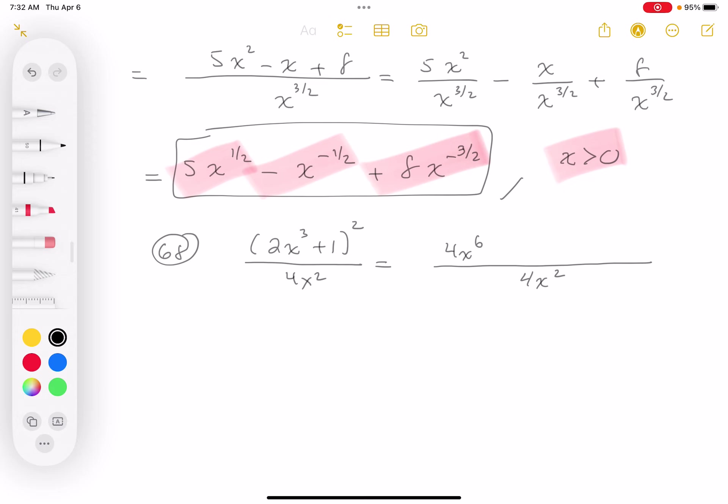So it's going to be 4x³, and the last one, 1 times 1 is 1. I'm going to split this into three separate terms: 4x⁶ divided by 4x², plus 4x³ over 4x²,